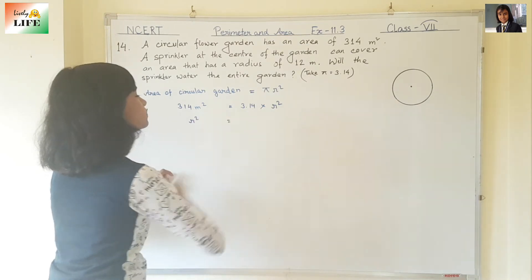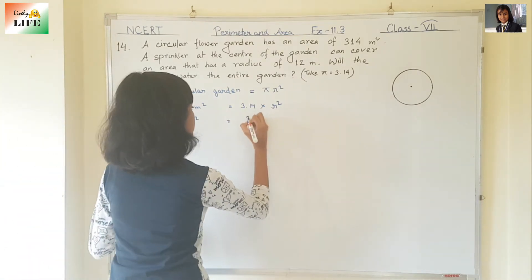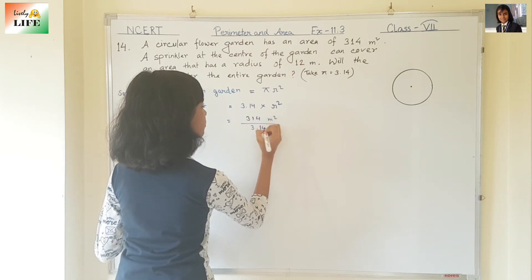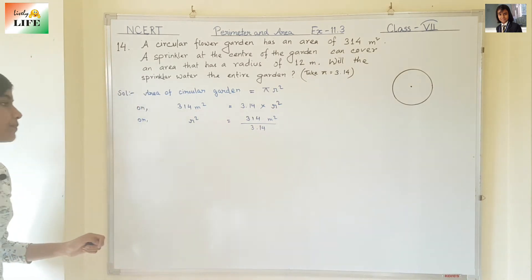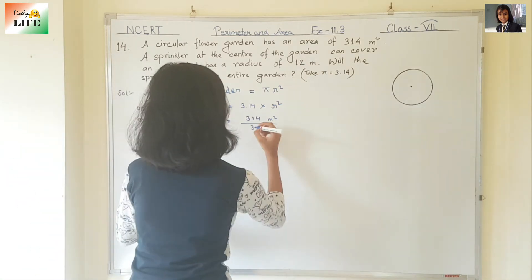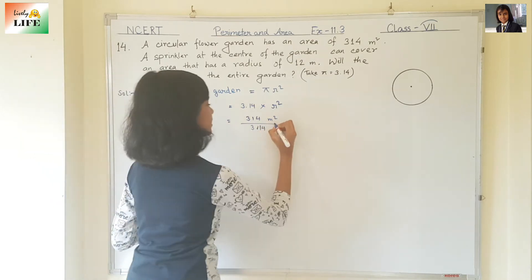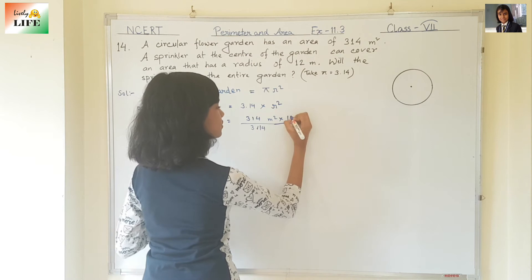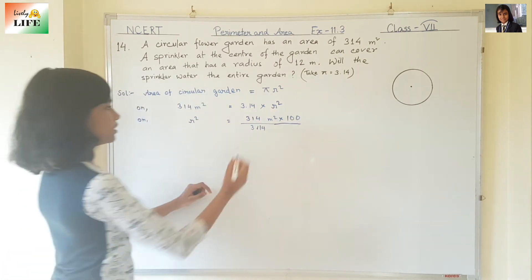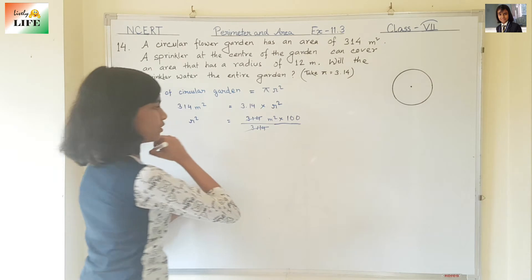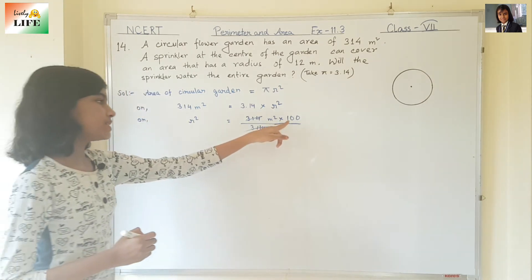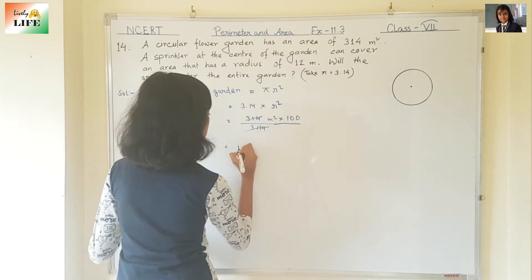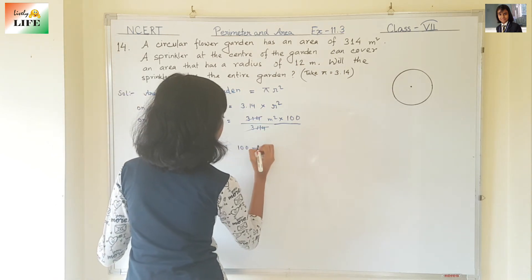R square is equal to 314 meter square divided by 3.14. If we remove the decimal, there are two digits after the decimal point, so after 1 there will be two zeros. 314 and 314 will cancel out, which means 100. So r square is equal to 100 meter square.